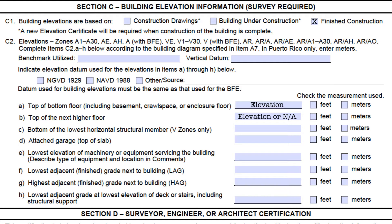C2C is for the bottom of the lowest horizontal structural member for buildings in V zones only. So for buildings in A zones, an NA should be entered, and for buildings in V zones, there should be an elevation in this field. One exception: if you are a community that regulates a coastal A zone — meaning you regulate a portion or all of your A zone to V zone standards — you will want your surveyors entering this elevation on their ECs. It is not an error to show this elevation for A zone properties, as C2C was initially intended to capture this elevation for V zones, since the lowest horizontal structural member is the key for insurance rating and NFIP compliance in V zones.